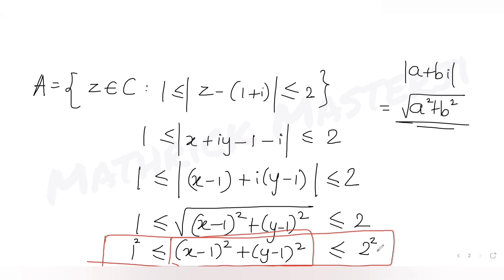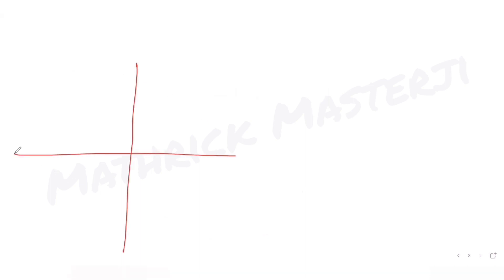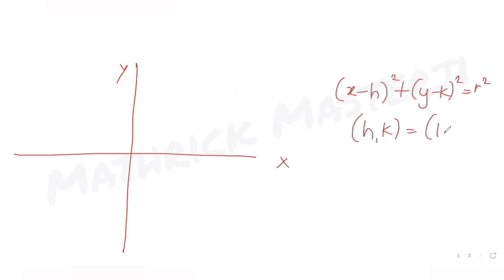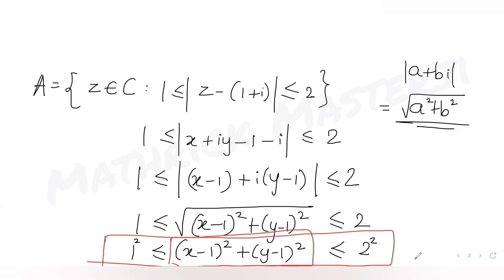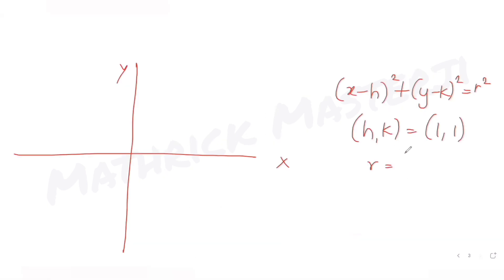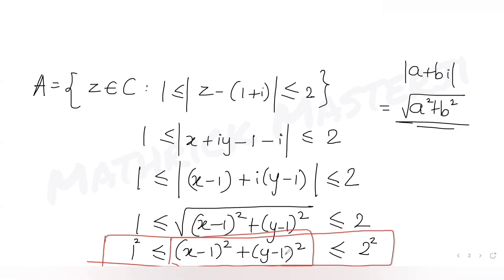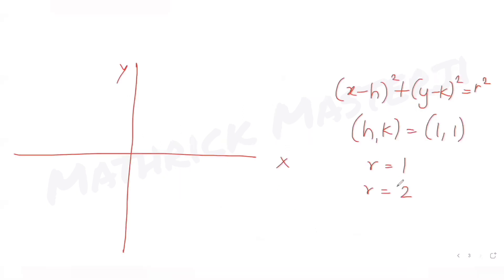When it is less than or equal to 4 (that is, 2²), it is inside or on the outer circle. So if I draw the two circles — using the general equation (x - h)² + (y - k)² = r² — the center (h, k) is (1, 1) for both, with radius 1 for the inner circle and radius 2 for the outer circle.